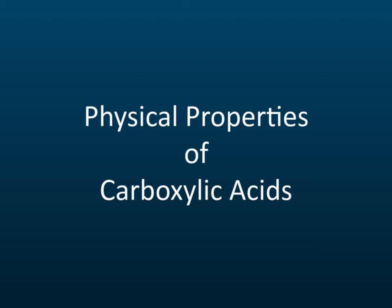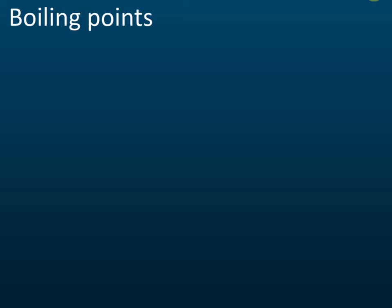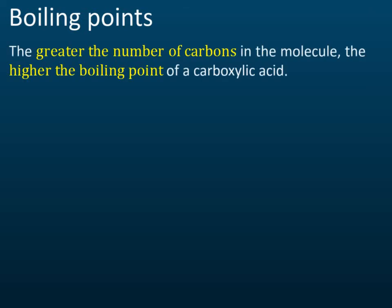Let's continue with physical properties of carboxylic acid. The first physical property we are going to discuss is the boiling point. The greater the number of carbons in the molecule, the higher the boiling points of carboxylic acid.